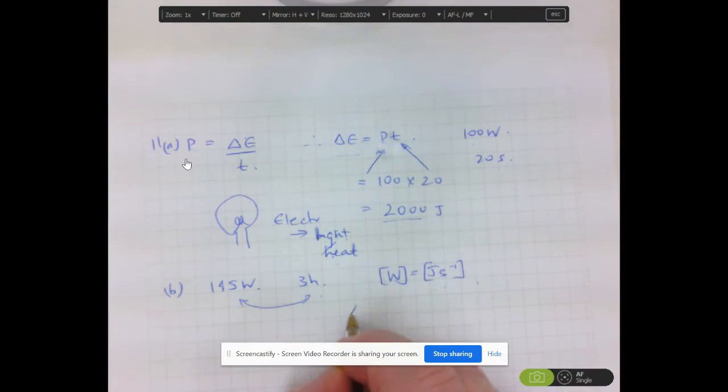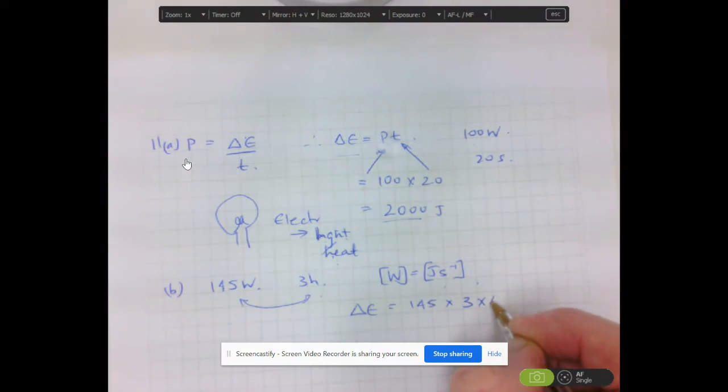The units of watts is joules per second. So you must have time measured in seconds. So our delta E, the amount of transformation, is equal to 145 watts times three hours. Now, three hours is three lots of 60 minutes, which is lots of 60 seconds. So there is three hours in our calculation. You just need to multiply that out.